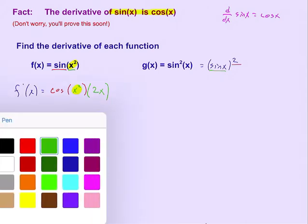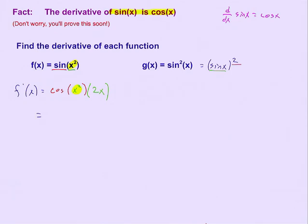And it's certainly okay to leave it like that, but you will very rarely see the 2x after the cosine. You will normally see it as 2x times the cosine of x squared. They're both correct. They're both equivalent to each other. This is just how you'll normally see it.